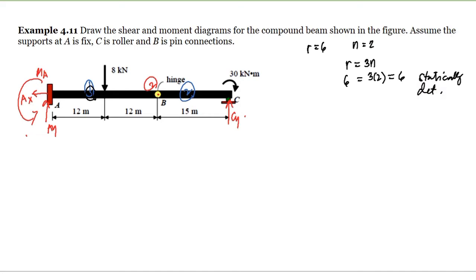Since it's determinate, we need to determine which side to start analyzing. If we analyze segment AB, we have five reactions: three at A (AY, AX, and moment at A) plus BY and BX. We can't solve that. But on the other side, we only have three unknowns: BY, BX, and CY. We can solve this side.